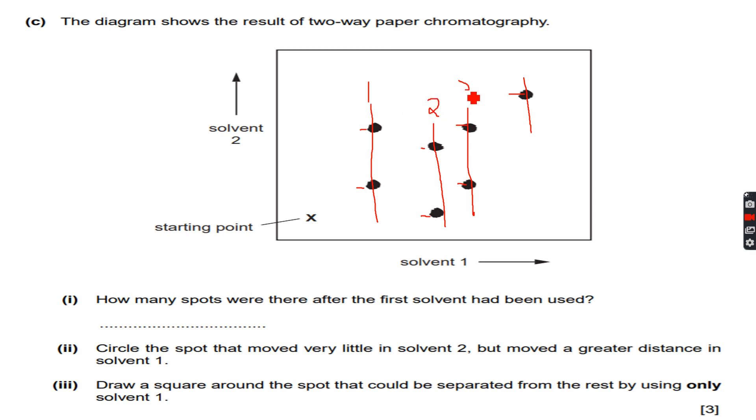You can say that this was one spot, this was another spot, this was the third spot, and this was the fourth spot. We are not counting both of them here because at that time solvent 2 wasn't used, only solvent 1 was used. Both of these were overlapping, so the number of spots was one. So there were four spots.